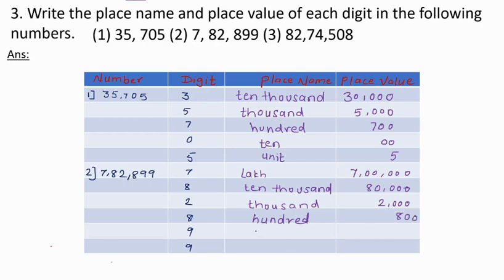Then 9: place name is 10 and place value is 90. Next 9 is at unit place and the place value is 9.